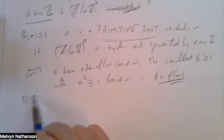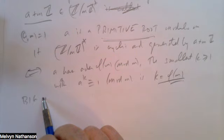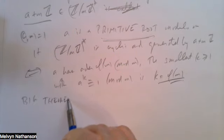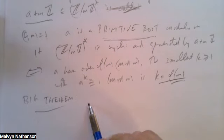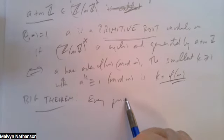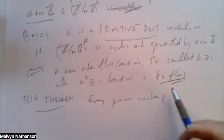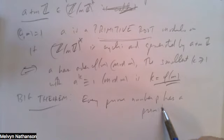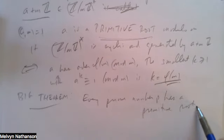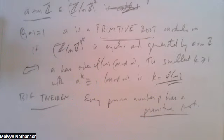A big theorem in number theory is: not every modulus m has a primitive root, but every prime number p has a primitive root. So if you're given a prime p, there always exists some number a, relatively prime to p (meaning not divisible by p), which is a primitive root mod p.